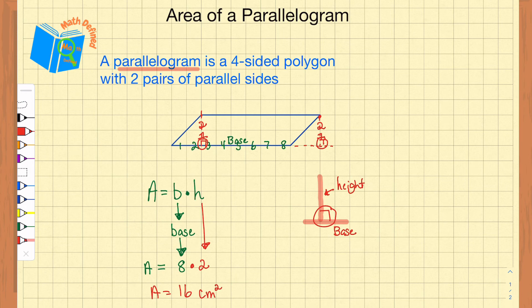Whenever you are multiplying a two-dimensional figure like a parallelogram, your label will always be the number of units squared.